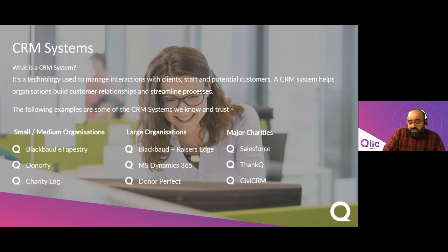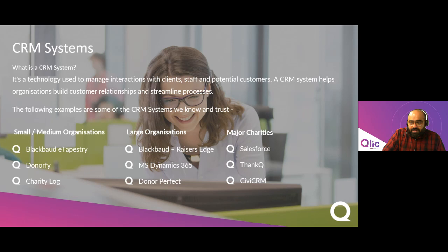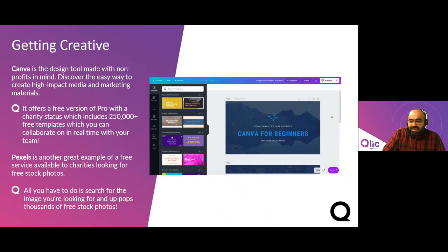A CRM can help with fundraising — collating data from multiple sources and facilitating strategies across email, direct mail and social media. For impact, you can use it for case management, beneficiary communication, capturing data and reporting on outcomes. For advocacy, you can create and manage outreach campaigns to drive petitions and letter writing. There's an abundance of ready-made CRM systems for the third sector — some of the most commonly trusted ones are on screen. I'd recommend comparison websites such as Capterra.co.uk, which has a specific non-profit CRM comparison tool.